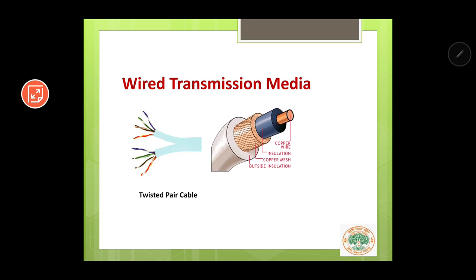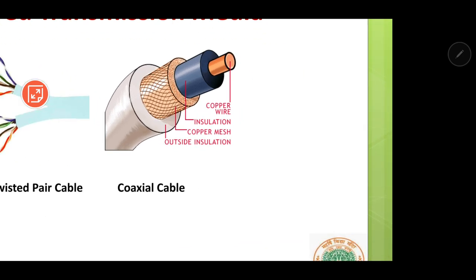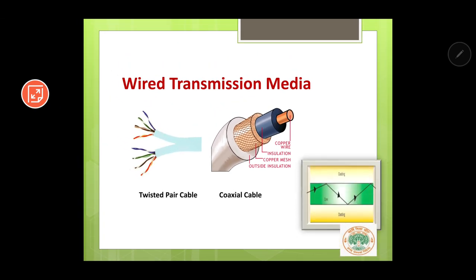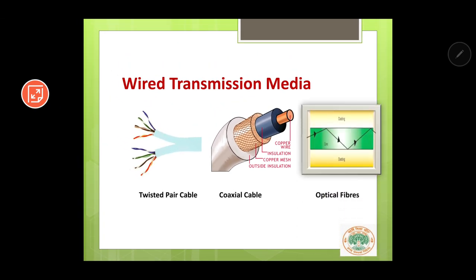Coaxial cable is mainly used in cable TV networks. The best one is optical fiber cable — it is the most costly, but it is the fastest mode of communication among all these methods. Wireless transmission media are basically waves and cannot be shown with a diagram. I hope this session was useful. I will see you again in part 2. Till then, have a nice day.